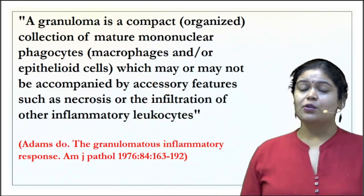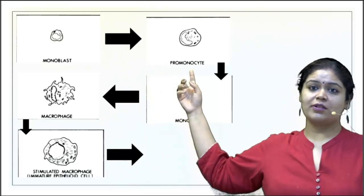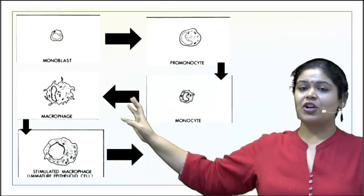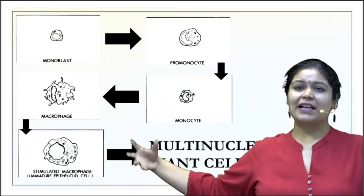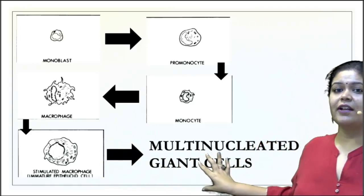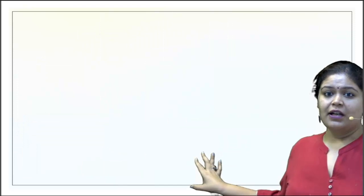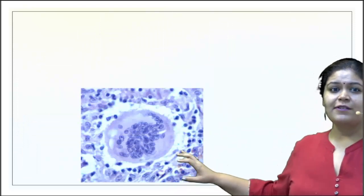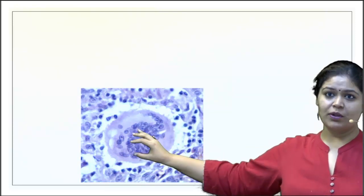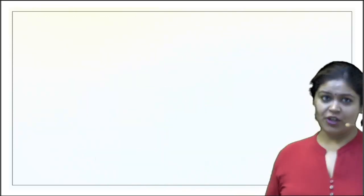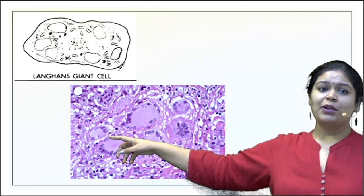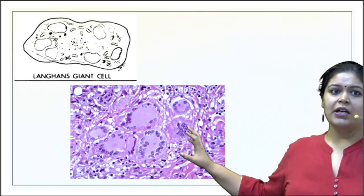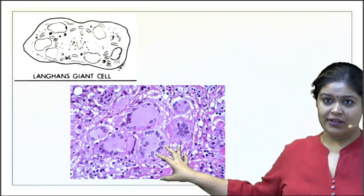Initially there is a monoblast which matures into a promonocyte, then a monocyte, which comes out of the blood into tissue as a macrophage, then becomes a stimulated macrophage — an immature form of epithelioid cells — which all fuse together to form multinucleated giant cells. The first type has nuclei aggregated toward the center: a foreign body type giant cell. The other type has nuclei toward the periphery in a wreath-like or horseshoe-shaped pattern: these are Langhans-type giant cells.